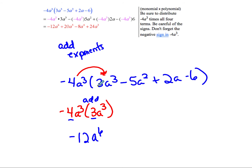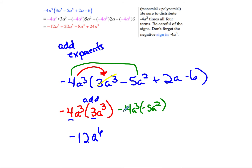Next, we multiply negative 4a to the 3rd times negative 5a squared. Negative 4 times negative 5 is 20. Then a to the 3rd times a to the 2nd — we add exponents — gives a to the 5th. So our next term is 20a to the 5th.